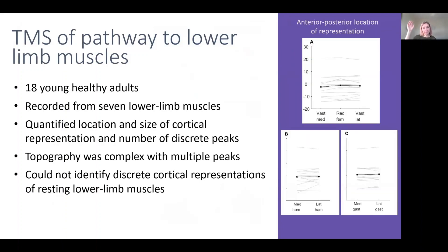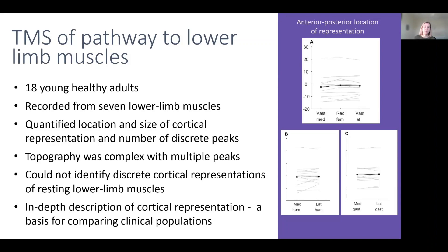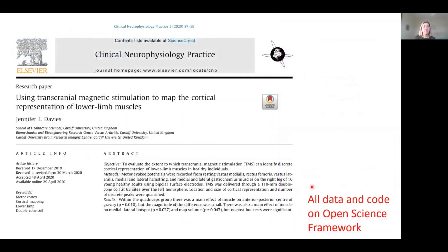There isn't one place that activates the quadriceps and one place that activates the hamstrings. What this paper provides is what that looks like in healthy people, so in the future we can start to look at whether that has changed in people with a pathology or in clinical populations. This is published in a journal which other scientists can read and use as they start to study clinical populations.